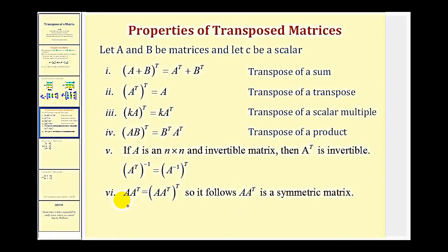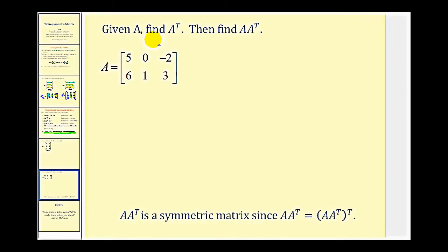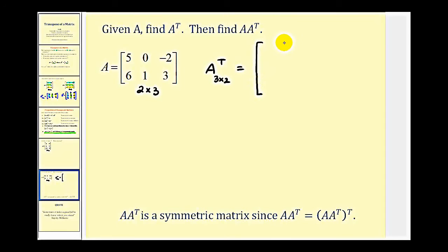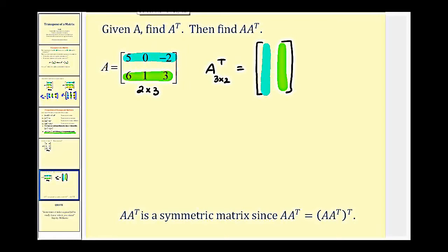Let's take a look at an illustration of this last property. We're given matrix A — a two by three matrix — and asked to find the transpose of matrix A and then the product of A and its transpose. The transpose will be a three by two matrix with three rows and two columns. The first row of A makes up the first column, and the second row makes up the second column: five, zero, negative two and six, one, three.